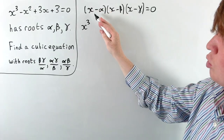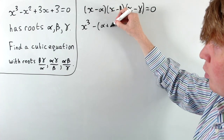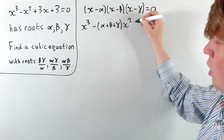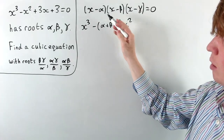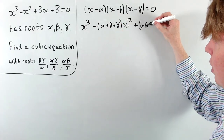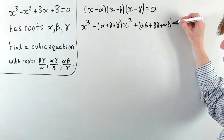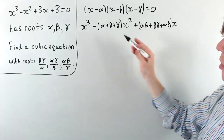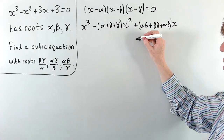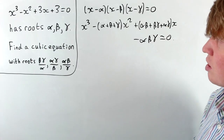So we get x cubed, and then for our x squared terms we have the negative of alpha plus beta plus gamma times x squared. For our x terms we have all of the product pairs: alpha beta, beta gamma, and alpha gamma, multiplied by x. And finally we have the negative of alpha beta gamma, all equal to zero.